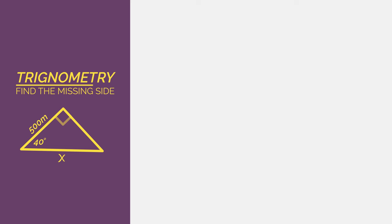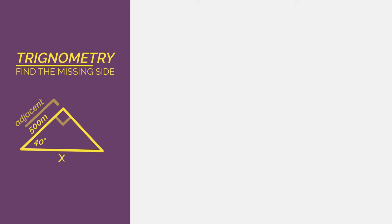So start by labelling the sides. This one is the adjacent because it is next to the 40 degree angle. And this one is the hypotenuse because it is the longest side and is across from the right angle.